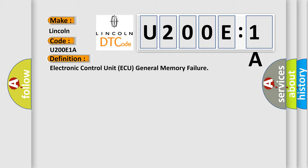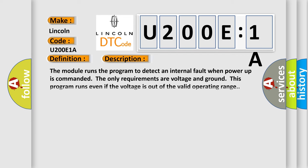And now this is a short description of this DTC code. The module runs the program to detect an internal malfunction circuit resistance when power-up is commanded. The only requirements are voltage and ground. This program runs even if the voltage is out of the valid operating range.